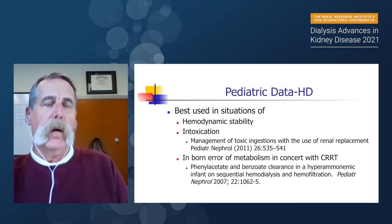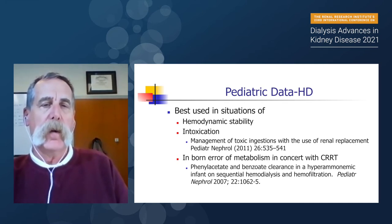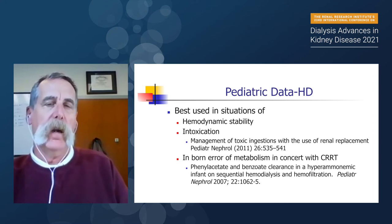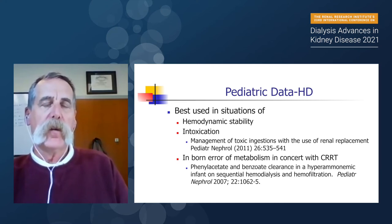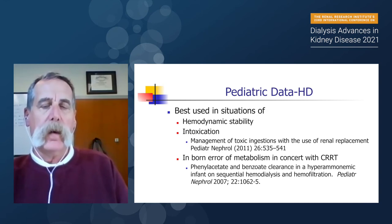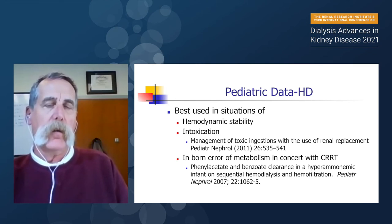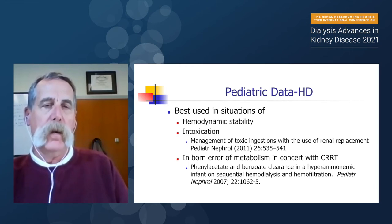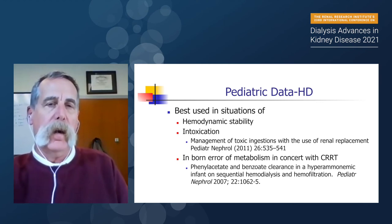Hemodialysis is best in two situations: patients who are hemodynamically stable, and patients with intoxications. If a patient has overdosed on a drug or medication, hemodialysis is your best bang for the buck in terms of clearance. In patients with hyperammonemia from inborn error of metabolism, hemodialysis will clear ammonia quicker than any other modality. We know that for every moment your ammonia is high, it negatively impacts neurologic outcome — so it's imperative to get ammonia down in a hurry. Hemodialysis can be safely done in children as small as two kilos.